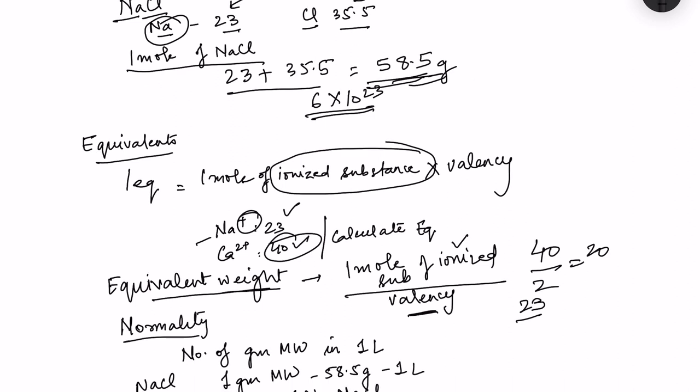The calculation of milliequivalents is different — we have to multiply with the moles. Because equivalent weight is half, if we look at concentration in milliequivalents per liter, because the molecular weight is half, the concentration will be doubled.